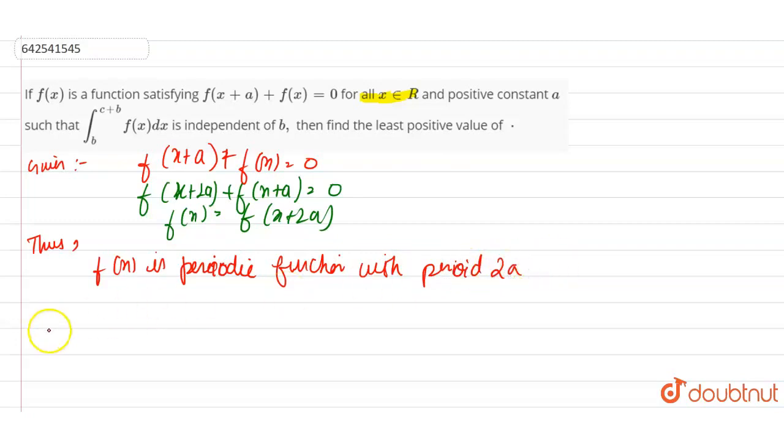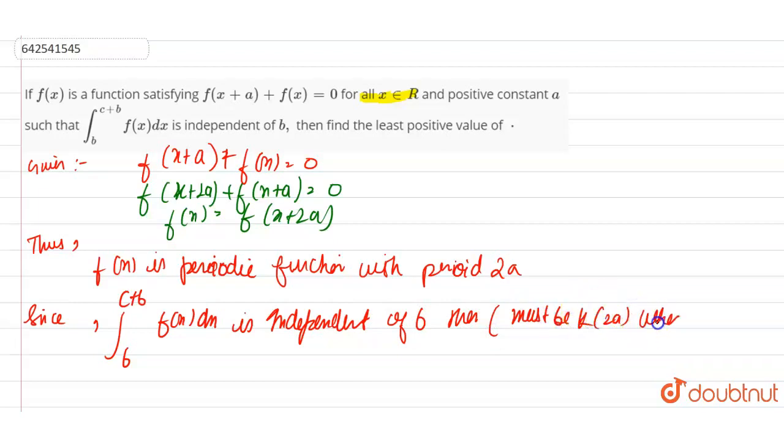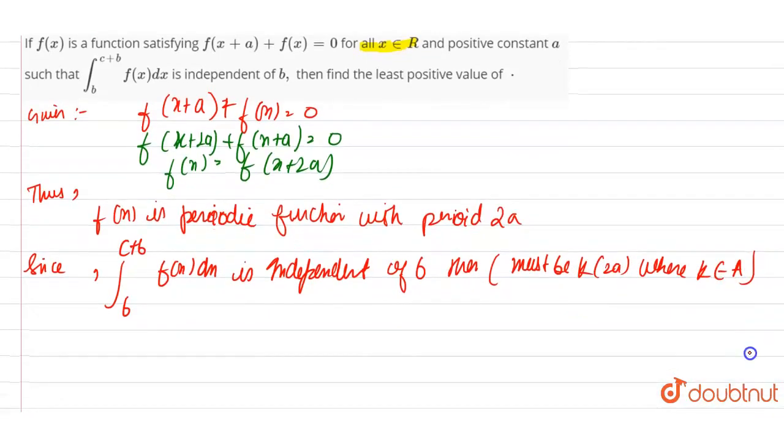Since integration b to c+b of f(x)dx is independent of b, then c must be k times 2a, where k belongs to natural numbers.